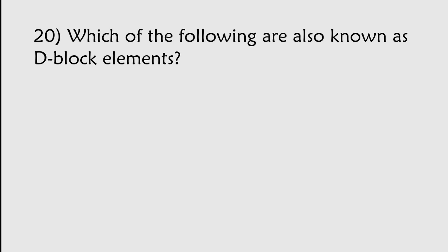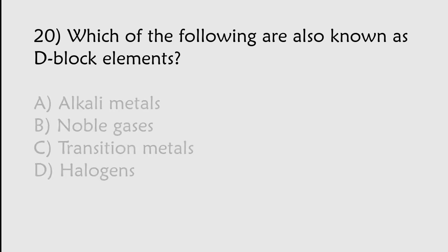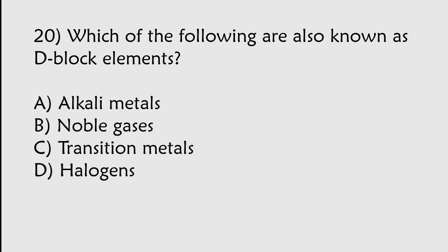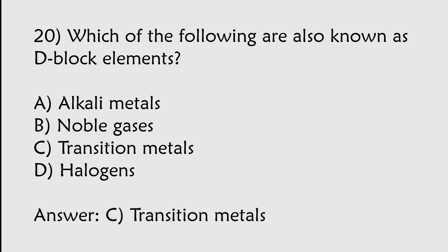Which of the following are also known as D-block elements? Alkali metals, Noble gases, Transition metals, Halogens. The correct answer is option C. Transition metals are also known as the D-block elements.